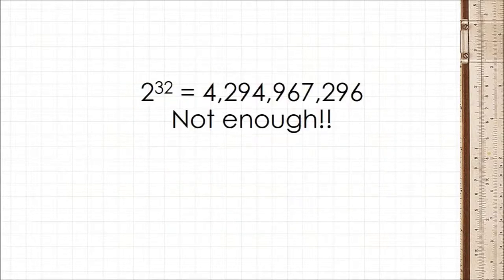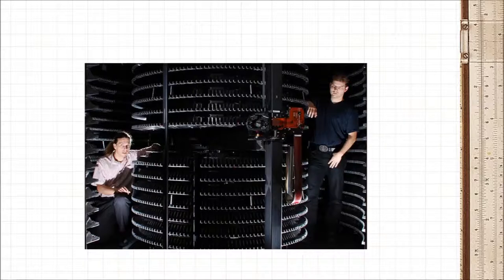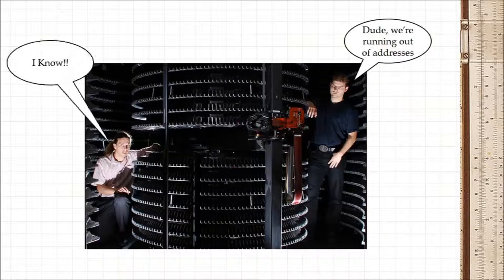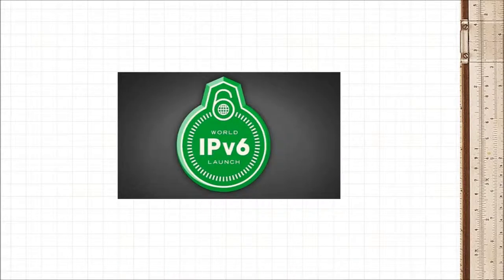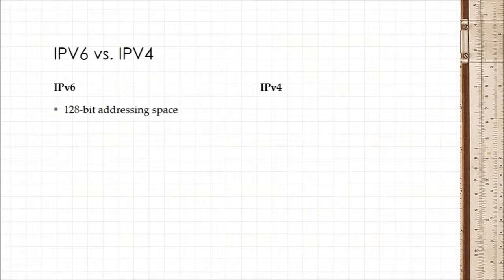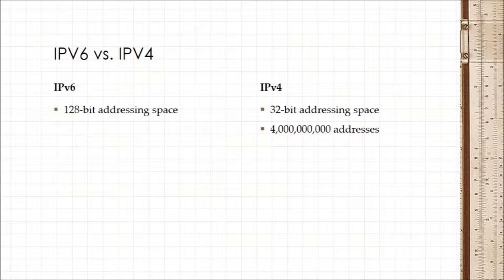So computer engineers the world over had to address the problem by introducing a new version of the Internet Protocol, IPv6. IPv6 has an addressing space of 128 bits rather than just 32. This means that instead of being able to support just 4 billion addresses, IPv6 can support, are you ready for this, 340 undecillion addresses.